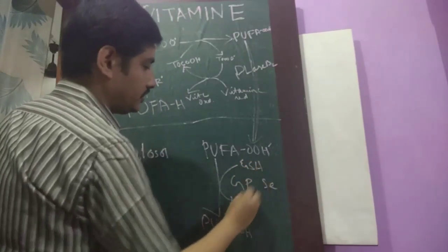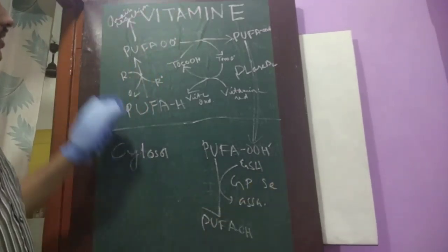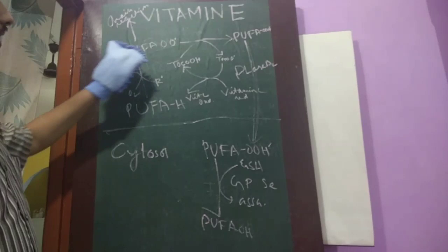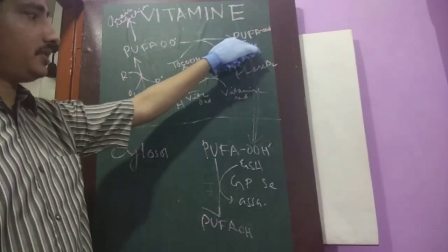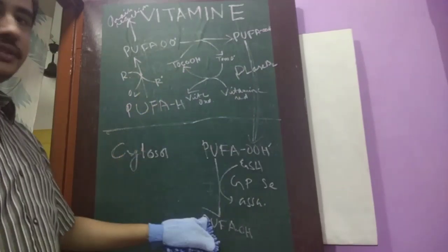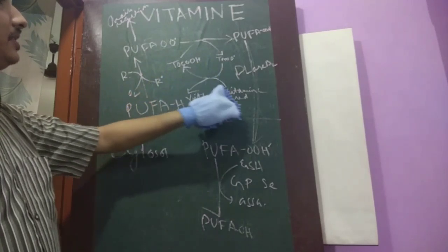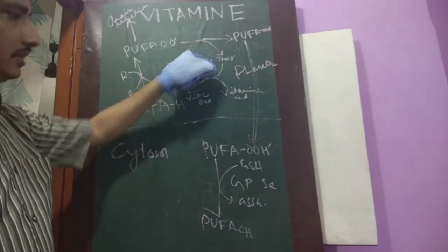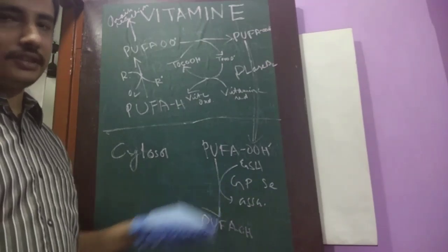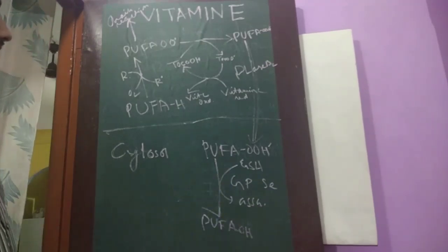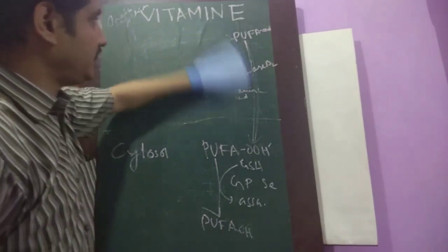This is reduced glutathione. This is oxidized glutathione. So this is how a PUFA superoxide radical is first converted into PUFA hydroperoxyl radical, then it is again reduced. And in this process tocopherol helps. And vitamin C helps the tocopherol. And it also requires selenium-containing enzyme known as glutathione peroxidase. So this is the antioxidant action of vitamin E.